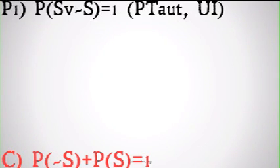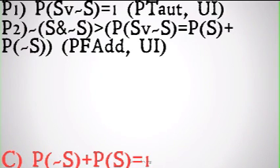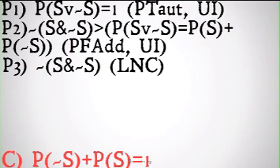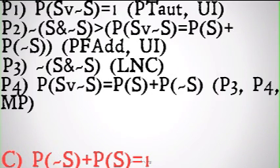We'll start off with our probability tautology principle, using universal instantiation to instantiate the law of the excluded middle in for L: the probability of S or not-S is equal to one. Then we take the principle of finite additivity, universally instantiate it with the law of the excluded middle to get: it's not the case that S and not-S implies that the probability of S or not-S is equal to the probability of S plus the probability of not-S. Then we assert it's not the case that S and not-S by the law of non-contradiction, which allows us to use modus ponens to get: the probability of S or not-S is equal to the probability of S plus the probability of not-S.